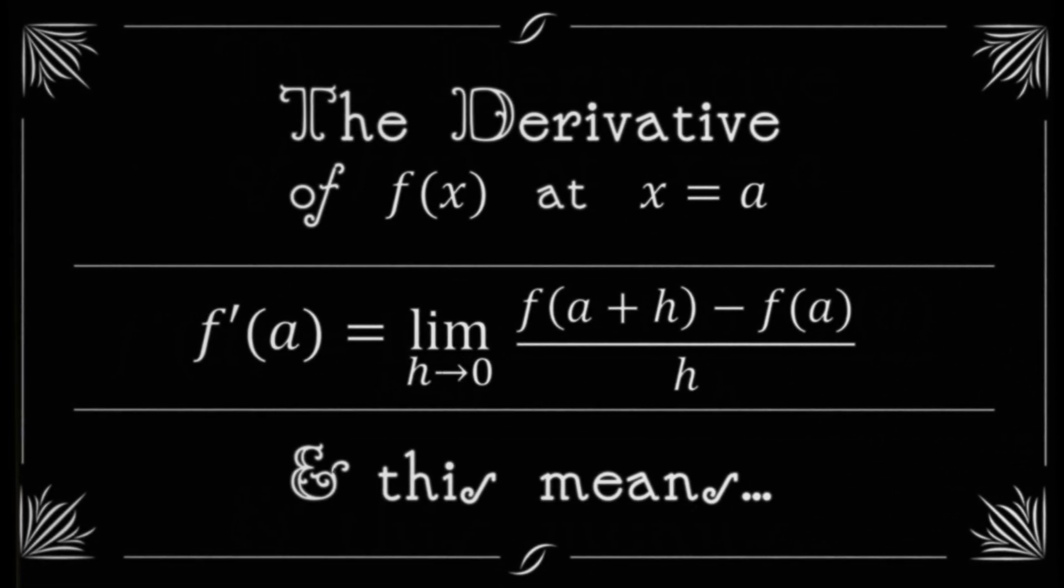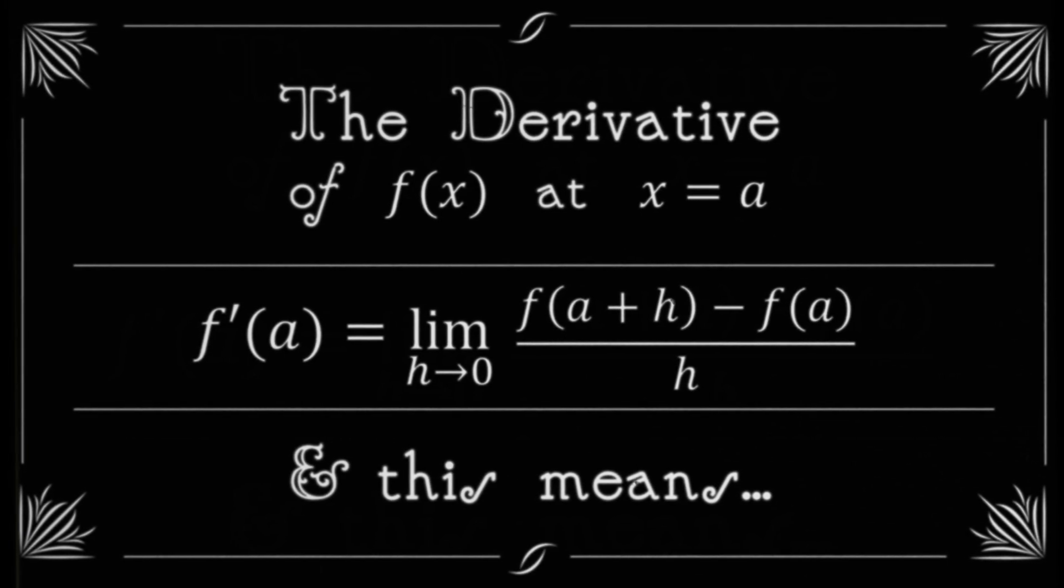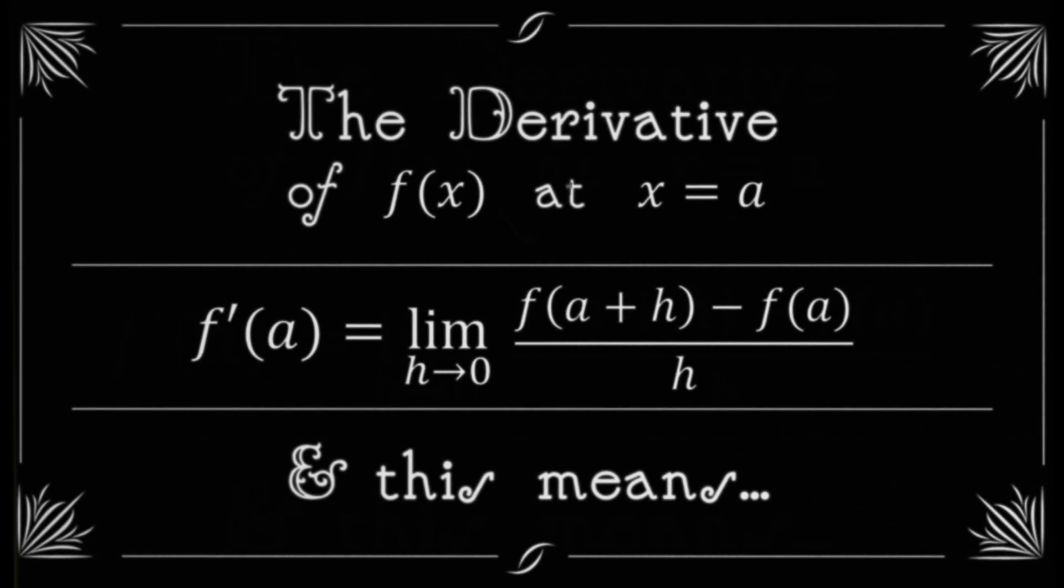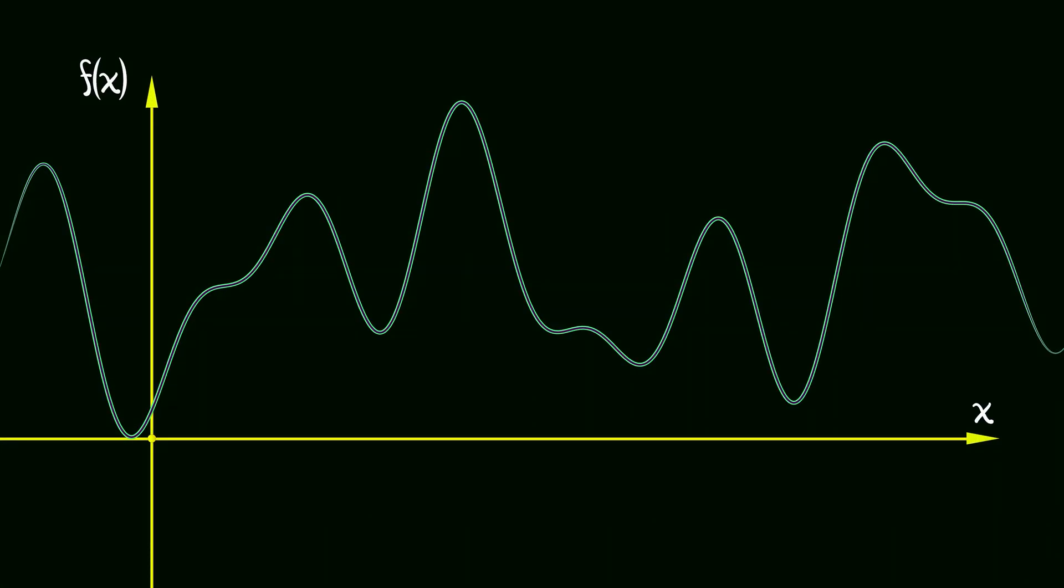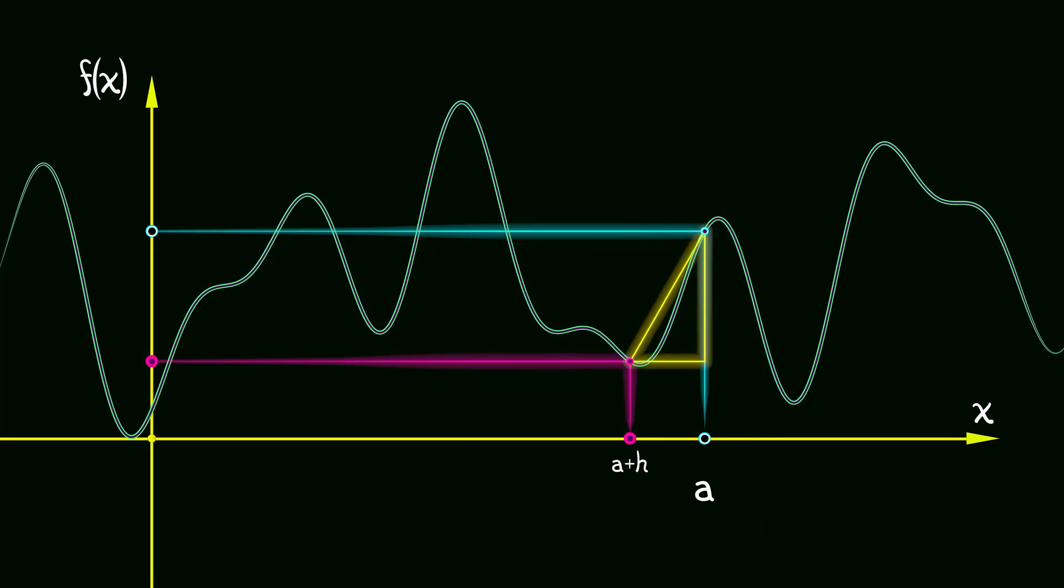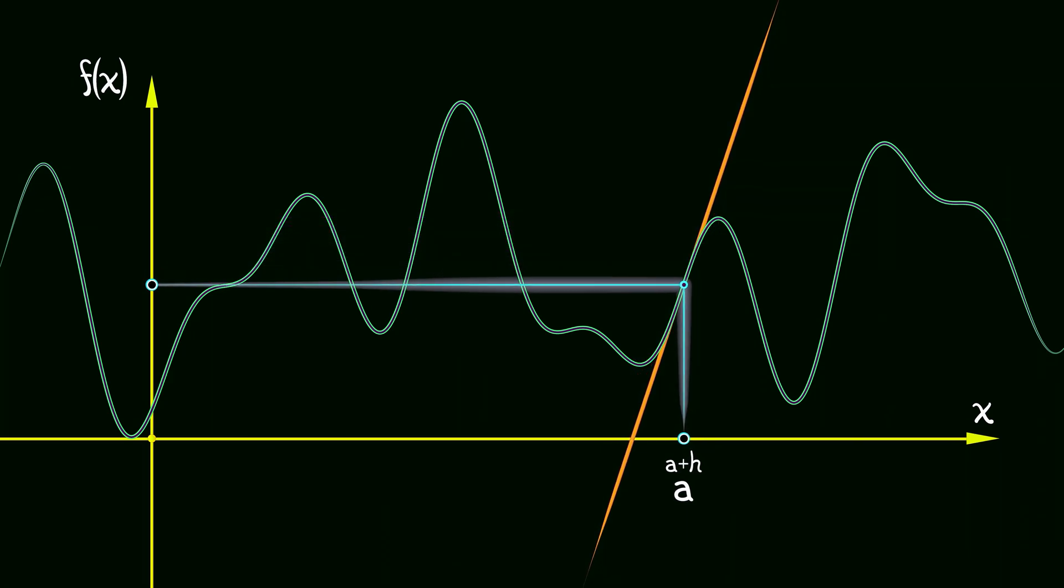I'm sure you remember what this means. What does this mean? What this means is slope, right? You've got the graph of your function and you look at what is happening near some input a and you change that input by an amount h. If you look at the change in the output f of a plus h minus f of a divided by the change in the input h, you take the limit as h goes to zero. That gives you the slope of the tangent line.